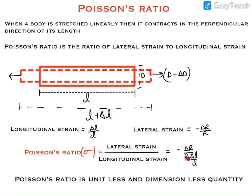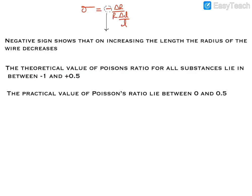Poisson's ratio equals −(ΔR/R) divided by (ΔL/L). Since ΔR/R and ΔL/L are both dimensionless quantities, Poisson's ratio is also a dimensionless and unitless quantity. The negative sign shows that on increasing the length, the radius of the wire will decrease.